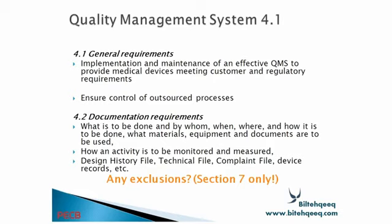Section 4.2 covers documentation requirements: what is to be done, by whom, when, where, and how it is to be done; what materials, equipment and documents are to be used; how an activity is to be monitored and measured; design history file, technical file, complaint file, device record, and any exclusion. If there is any exclusion, we have to describe it. We have to develop proper documentation procedures defining who is responsible for what and who is doing what.